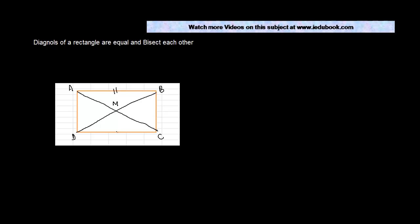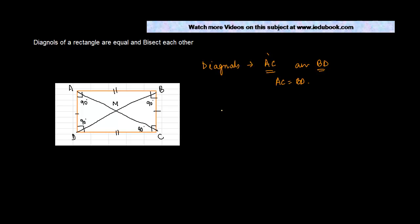In a rectangle, we know that AD is equal to BC, being opposite sides of the rectangle. We also know that all angles are equal to 90 degrees. Now, the two diagonals in this rectangle are AC and BD, so we have to prove AC is equal to BD.